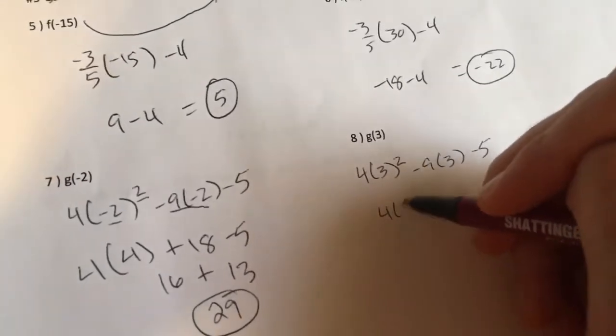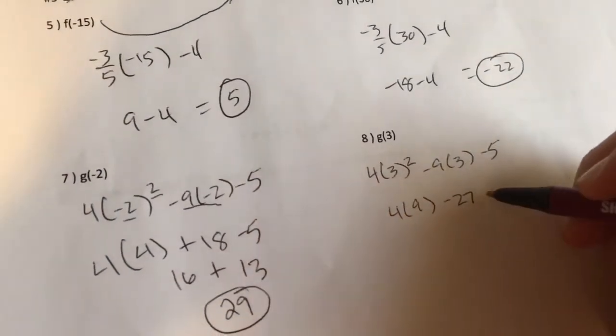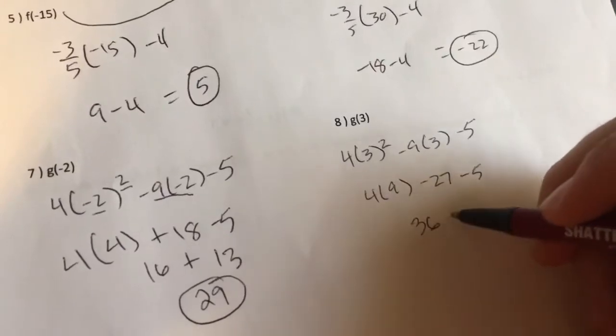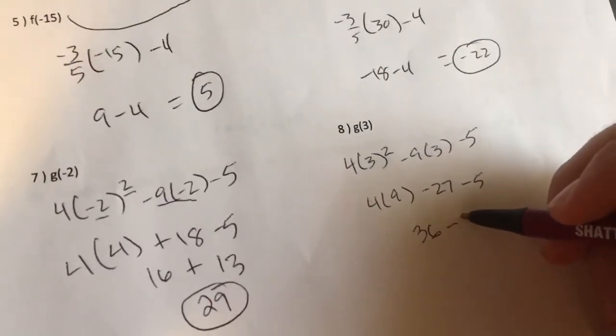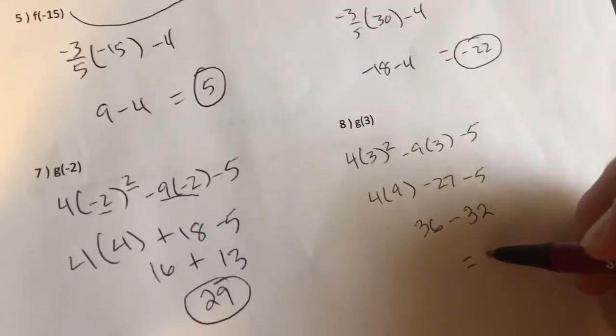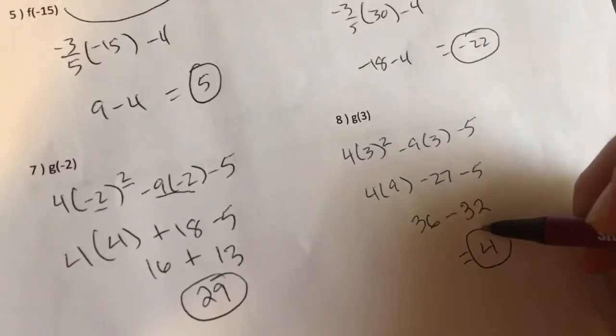29 is my answer. G of 3 says 4 times 3 squared minus 9 times 3 minus 5. This is going to be 4 times 9 minus 27 minus 5. 4 times 9 is 36. If I'm in debt 27 and lose 5 more I'm in debt 32. 36 minus 32 is 4.